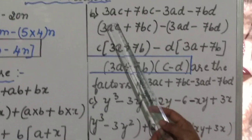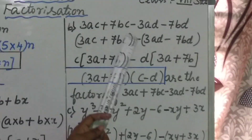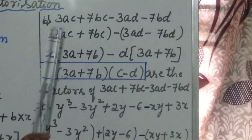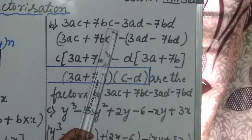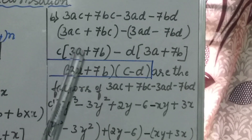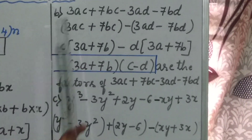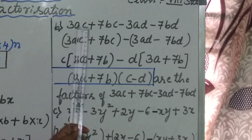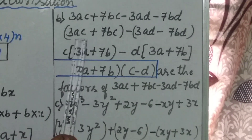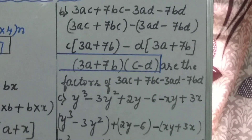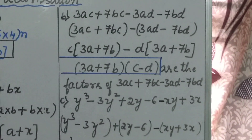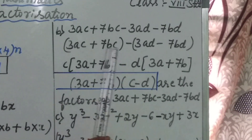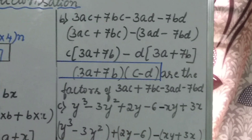The next question is 3ac plus 7bc minus 3ad minus 7bd. Here children, how many terms are given in total? 4 terms — 1st, 2nd, 3rd and 4th. Next step: you arrange the terms in suitable groups. With 4 terms you make 2 groups. The first group is 3ac plus 7bc, and the second group is minus 3ad minus 7bd.